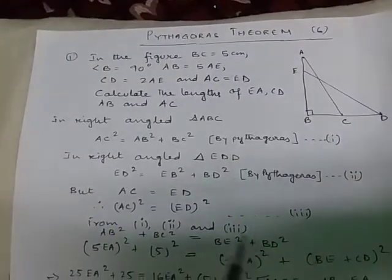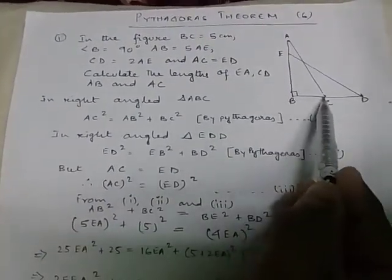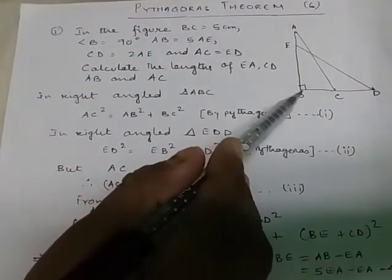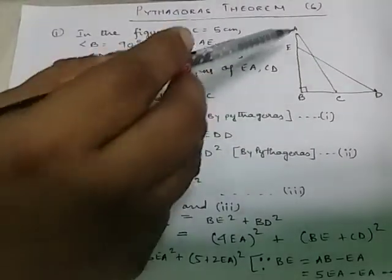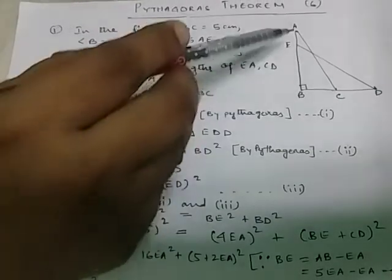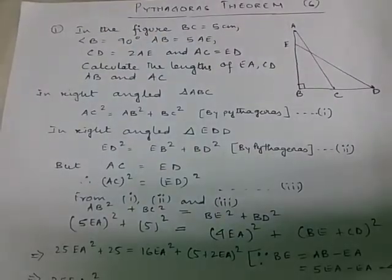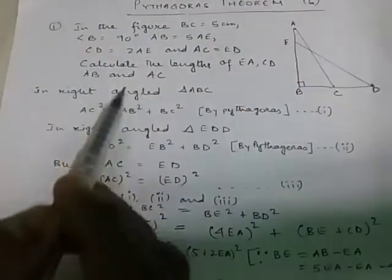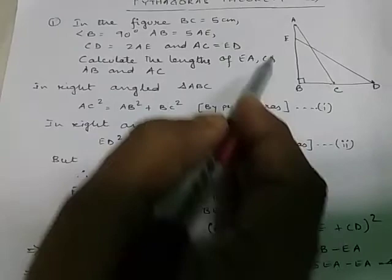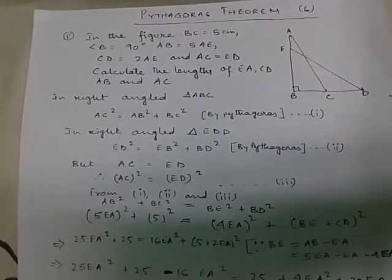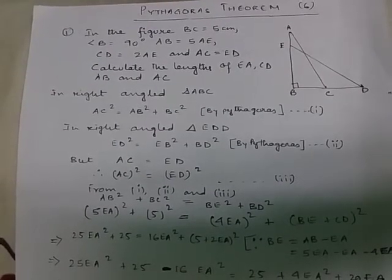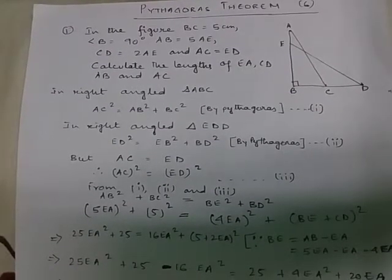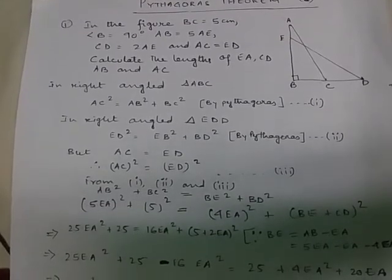Watch the video carefully. Look at the figure. In the figure, BC equals 5 cm, angle B is 90 degrees, AB equals 5AE, CD equals 2AE, and AC equals ED. You have to calculate the length of EA, CD, AB and AC.